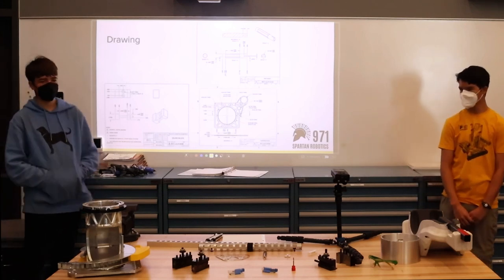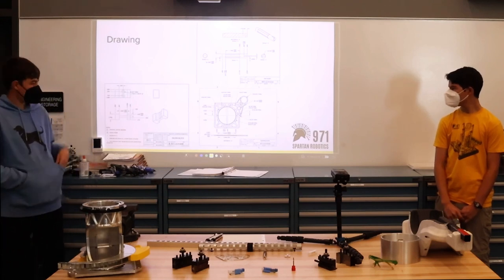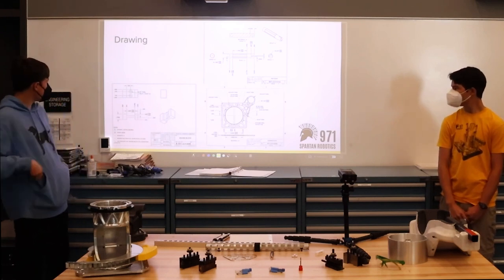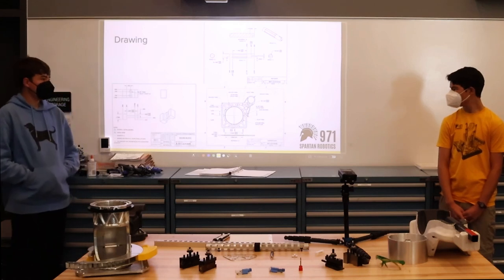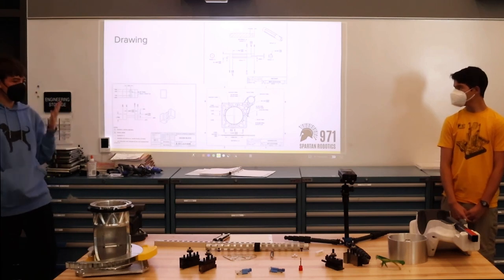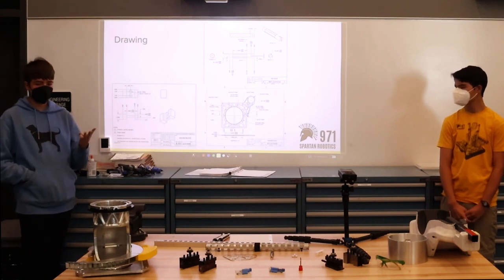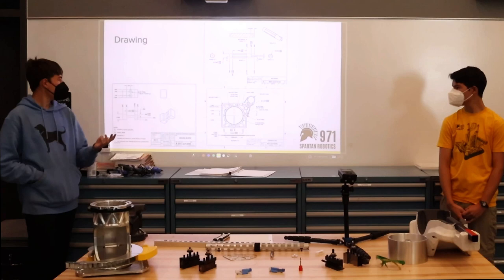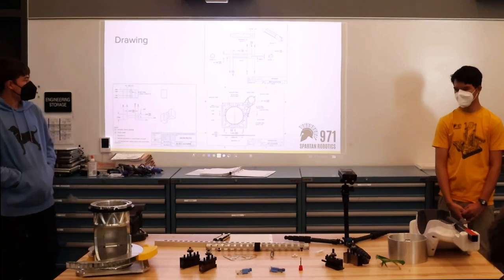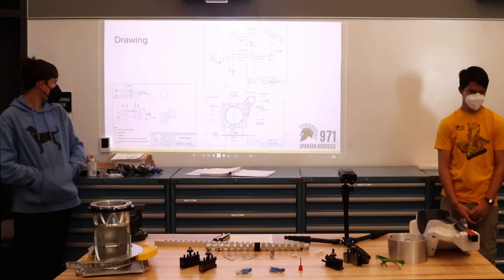So for every part we make, we make drawings. We make them for all the machines, but the router doesn't really need them because of what Justin explained earlier, so you just go straight to the machine. But it's usually used for things like the mill and the lathe, where it shows all critical dimensions on every side of the part so that the manufacturer knows exactly how to make the part, exactly how precise the part needs to be, and anything special they need to add on in order for it to be done. Drawings are also useful for something later in our process, which is inspection. And I guess I can go over that later. But yeah, drawings. Questions.